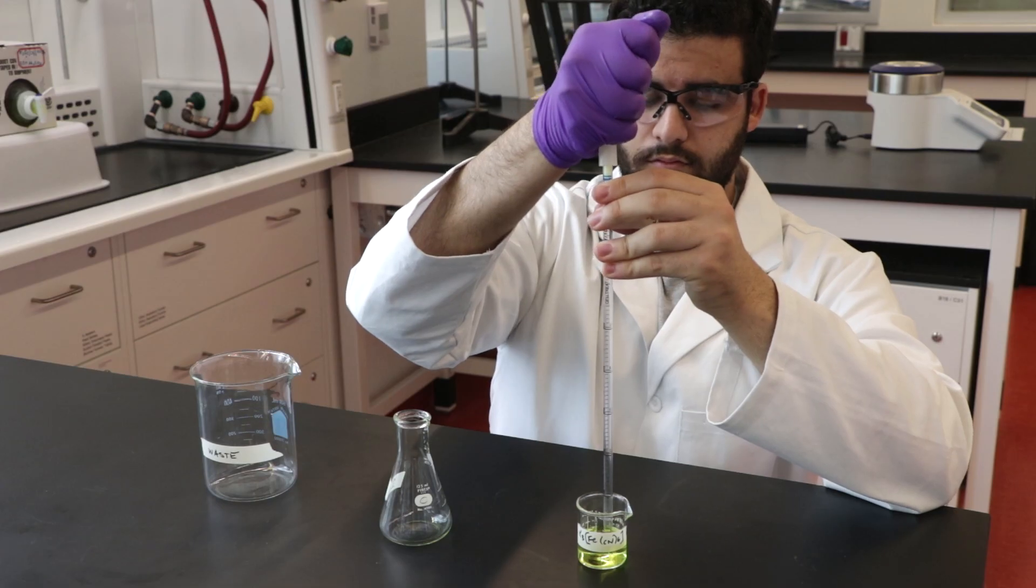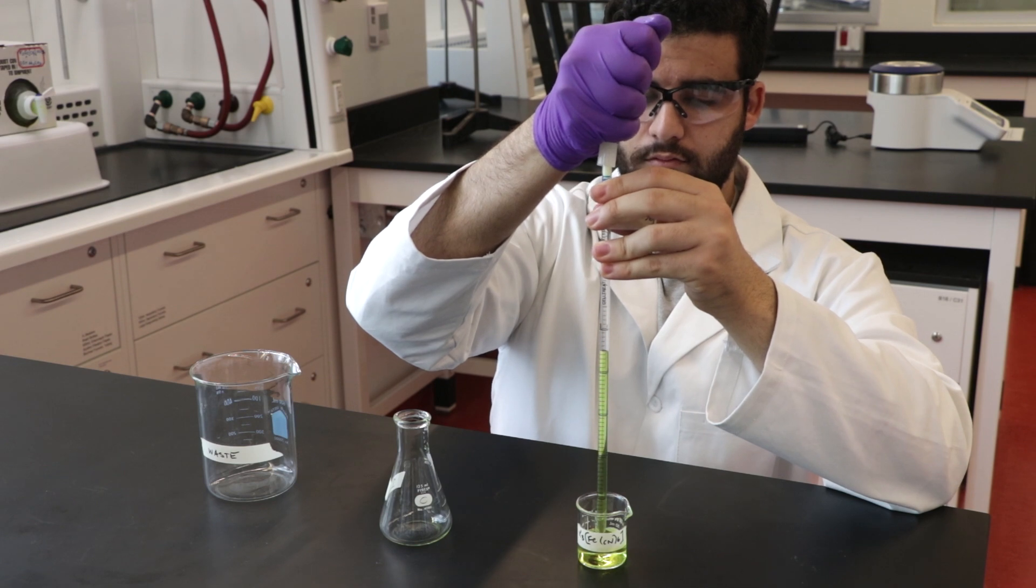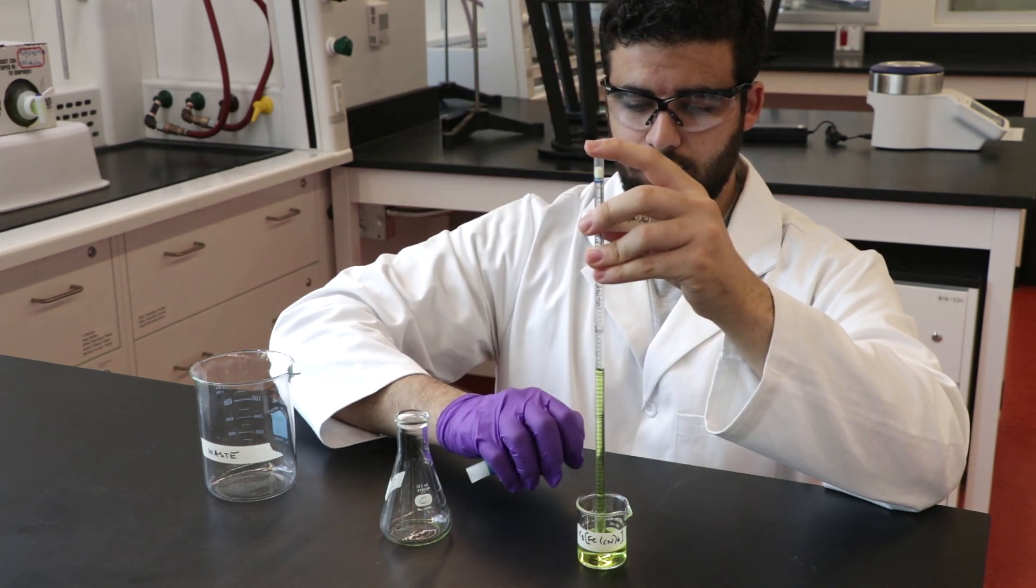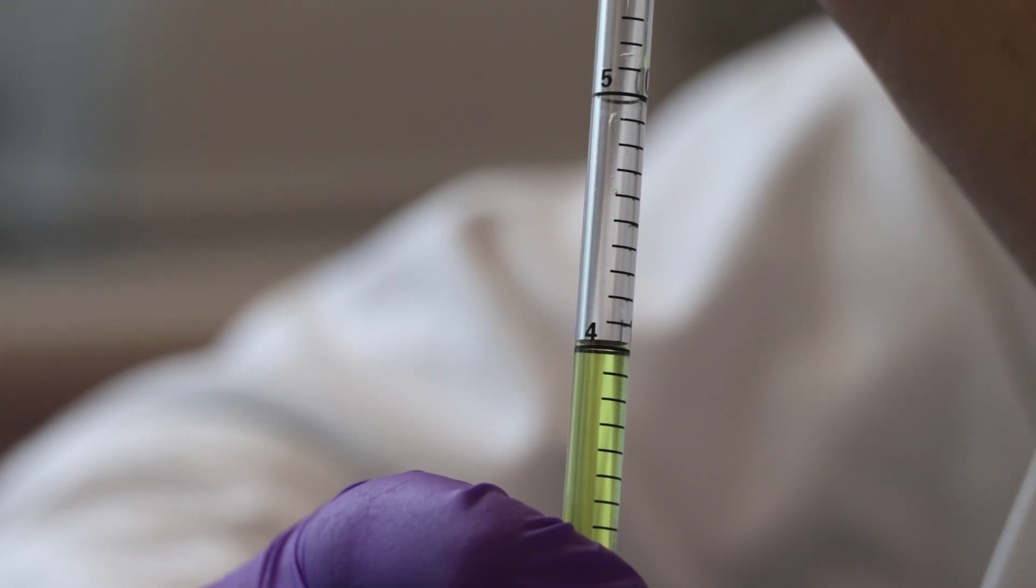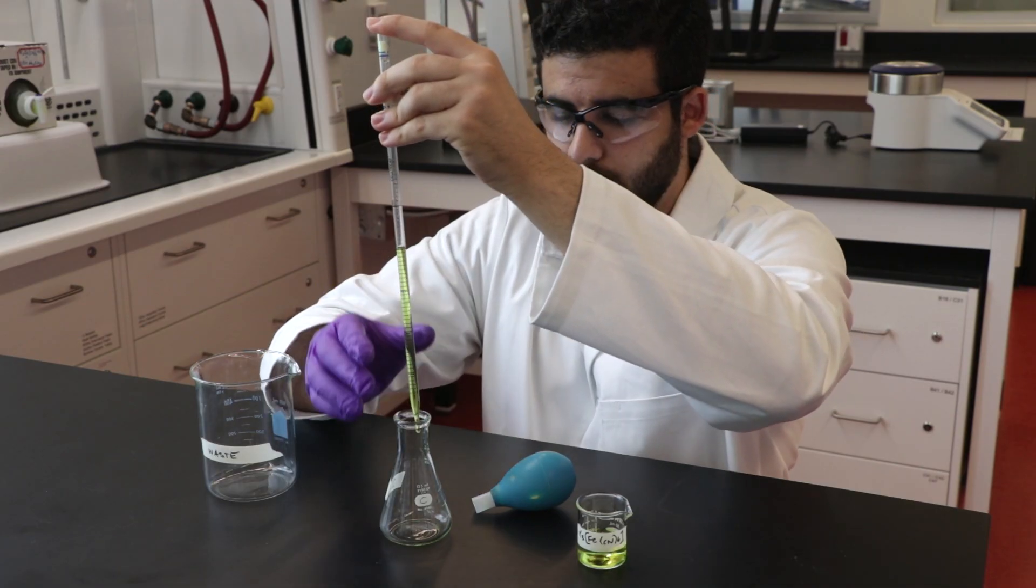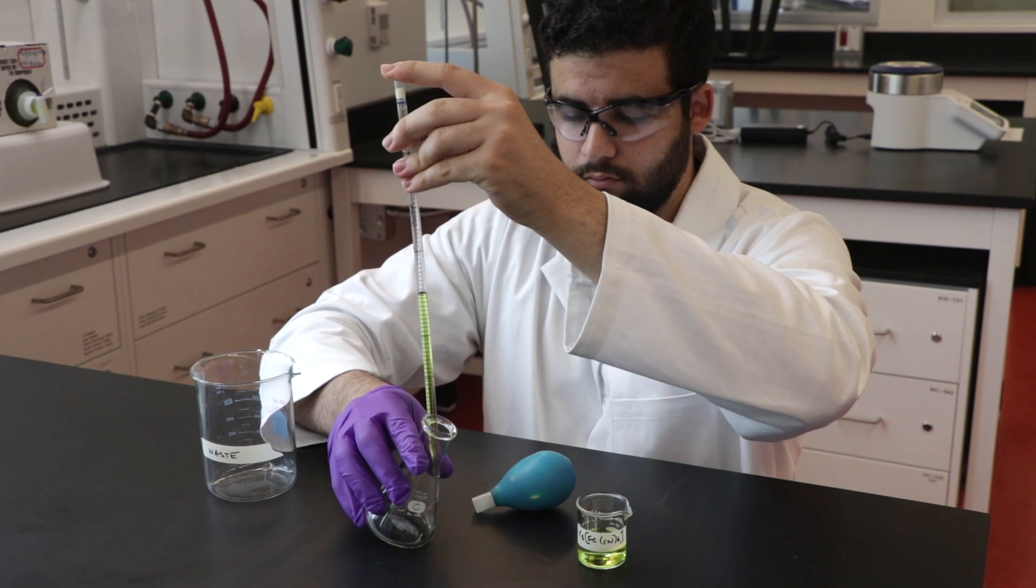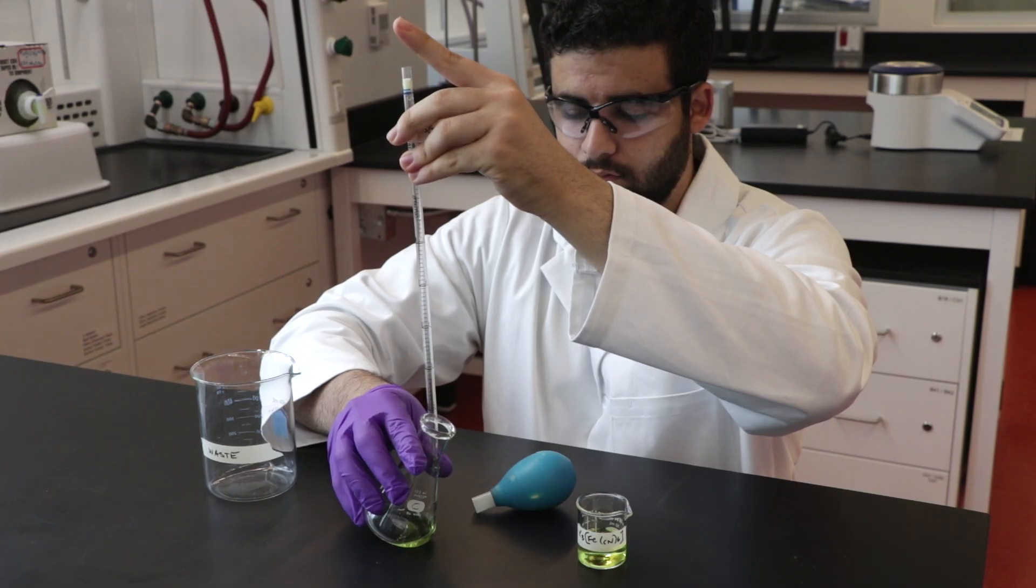Begin by pipetting 4 mL of ferrocyanide into each of the Erlenmeyer flasks using a mohr pipette. Keep the pipette at eye level and ensure that the bottom of the meniscus is at the value you need to pipette. Remember to have one hand ungloved for this step.